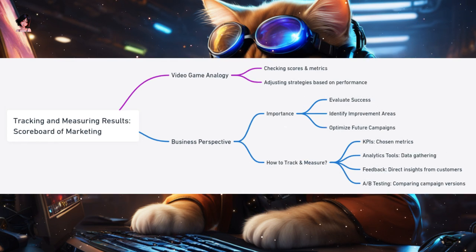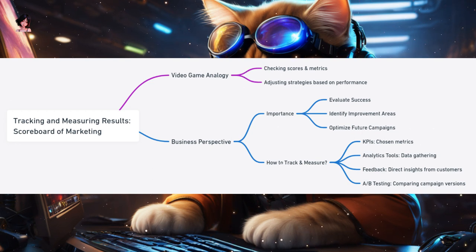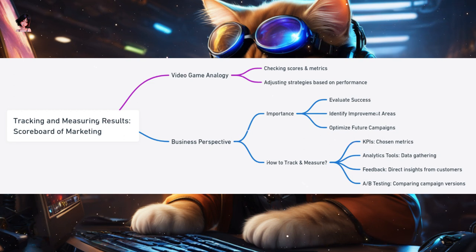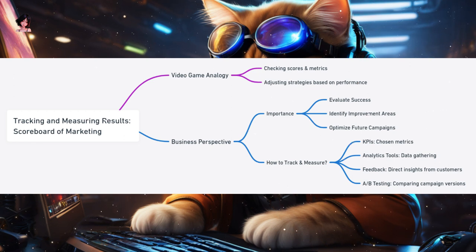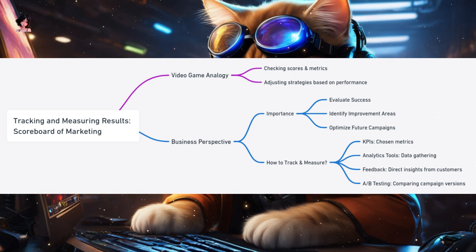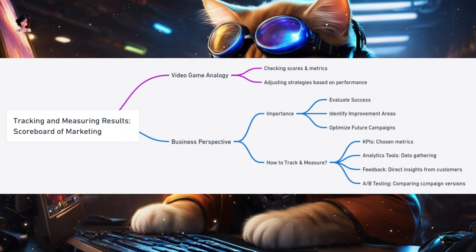Tracking and measuring results — the scoreboard of your marketing game. Imagine you're playing a video game. As you progress, you constantly check your score, the number of lives left, and the time remaining. These metrics help you understand how well you're doing and what you need to do next. Similarly, in the world of marketing, tracking and measuring results give you insights into the performance of your campaigns and guide your future actions. Evaluate success — just as a scoreboard tells you if you're winning or losing, tracking results helps you determine if your marketing campaigns are successful.